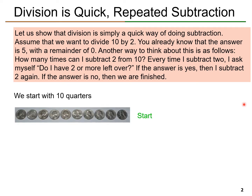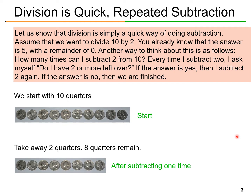We start out with 10 quarters — 1, 2, 3, 4, 5, 6, 7, 8, 9, 10. Take away 2 quarters and we have 8 quarters remaining. So, 8 quarters remain after subtracting 1 time.